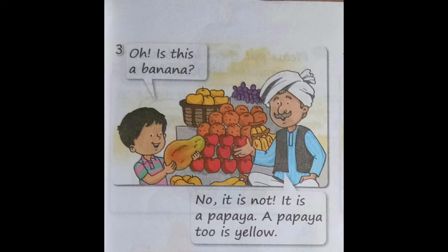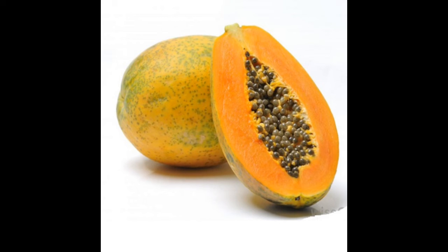Next, we learned how Amman tried identifying papaya. Holding a papaya in his hand, he asked the shopkeeper, 'Oh, is this a banana?' The shopkeeper replied, 'No, it is not. It is a papaya. A papaya too is yellow.' So now Amman was able to identify the fruit papaya and could make the difference between papaya and bananas.